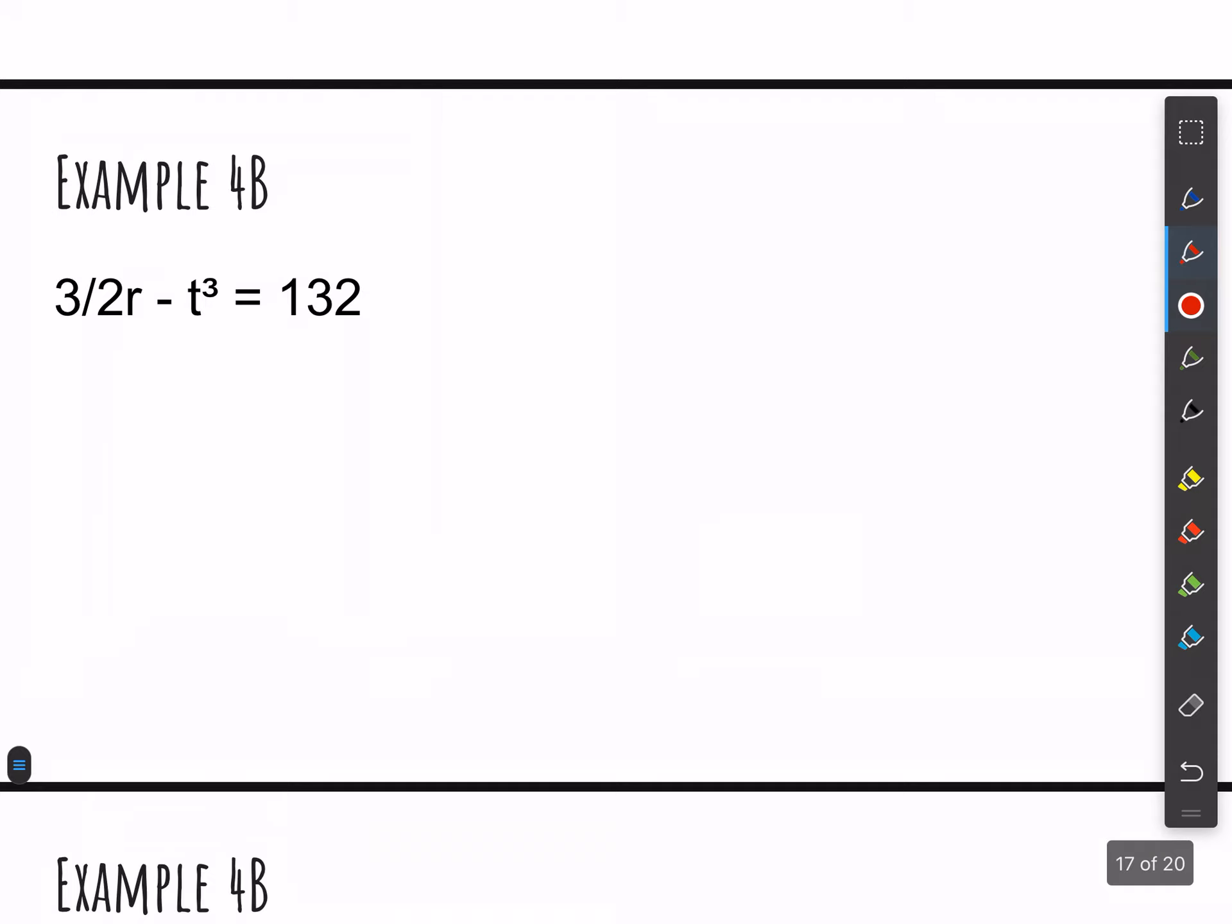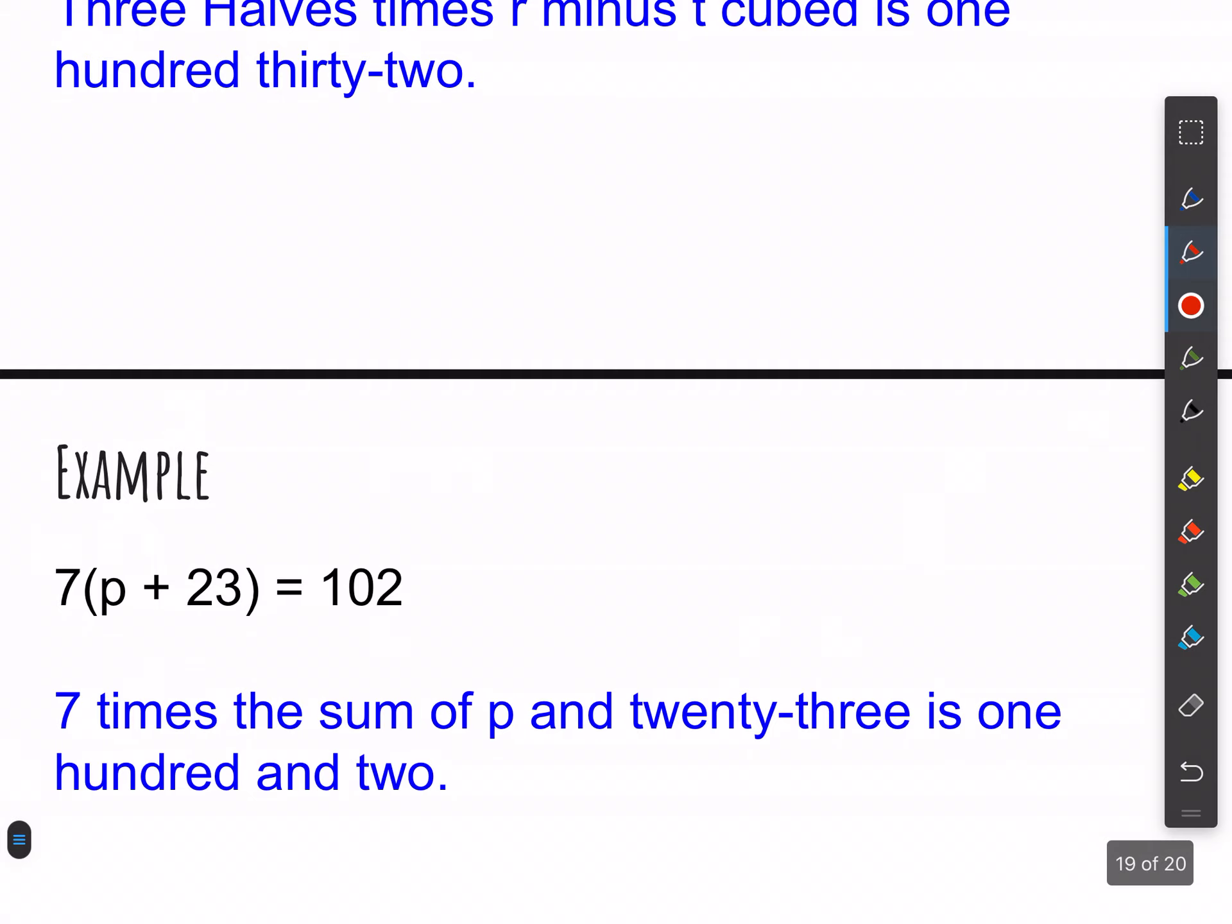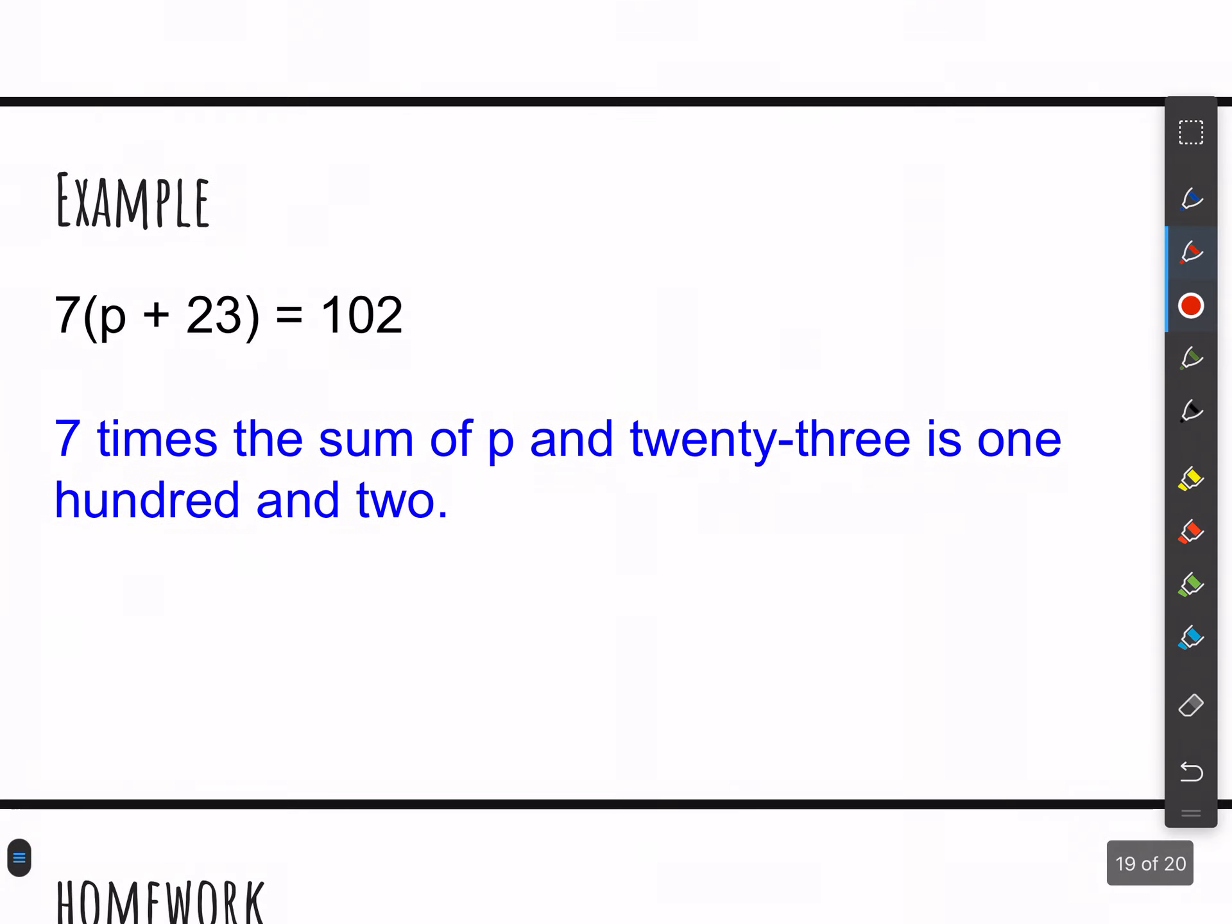For 4B for this one, we have, well, we can say that that's three halves, or you could talk about a quotient there, but I would just say we have three halves times R minus T cubed is 132. So they just want you to write out a verbal. Oh, look, I did it for you right there. And then is there one more that we want to do here? This is just an extra example, I think, that I gave you guys. So you could take a look at that, but I'm not going to go over it. I'm going to keep the video shorter.